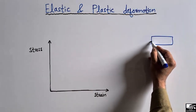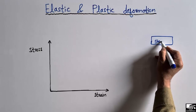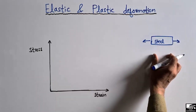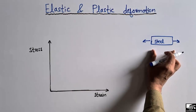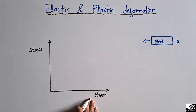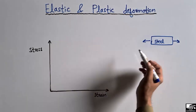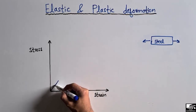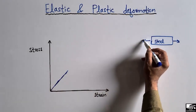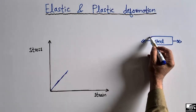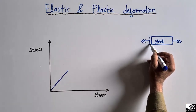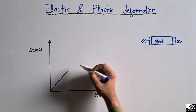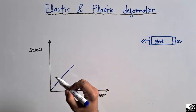Let's consider we have a steel material and I apply a load on both sides of this steel material. There will be some stresses and strains created inside the steel material. By applying the load, the stresses and strains increase, and by increasing the load further, the material will tend to deform and expand to a new position.